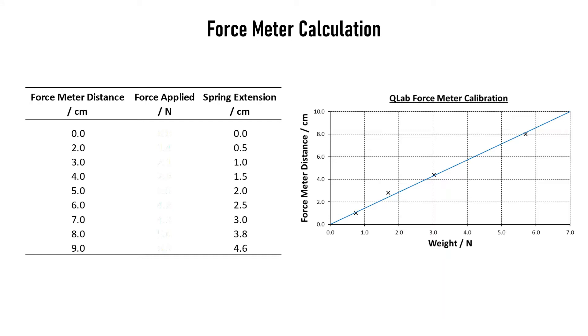But then if we look at two centimeters and go across onto the blue line and down, we can see that's about 1.4. And we can slowly populate each of our forces until we've completed the table.